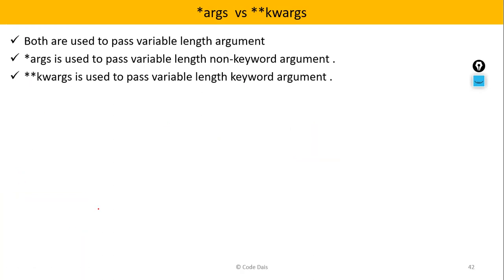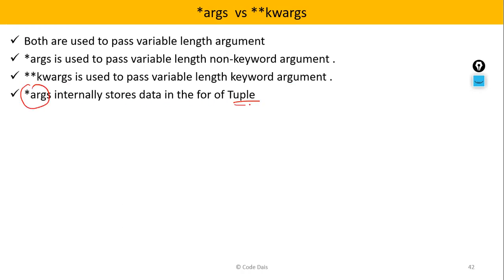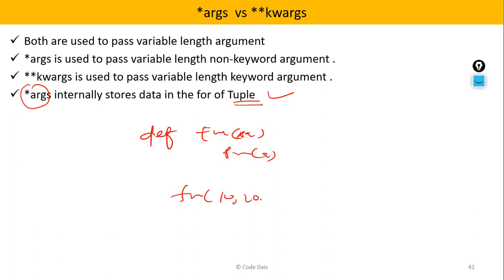Next, if you observe carefully, *args internally stores data in the form of a tuple. So that means if you write DEF phone(*a) and print a, at the time of calling if you pass 10, 20, 30, these values will be stored inside a in the form of a tuple.